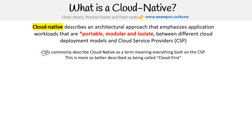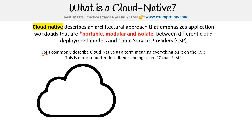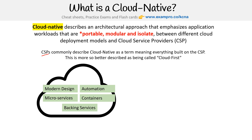There are also diagrams online that talk about the components that go into cloud native. The idea is they'll list modern design, automation, microservices, containers, and backing services. Modern design means using a modern architecture — which includes microservices and containers, or serverless architecture — and then automation as a component of it. Backing services meaning most of it will be portable, modular, and isolated, but you might leverage backing services like cloud service provider services, or other cloud native services that run anywhere.